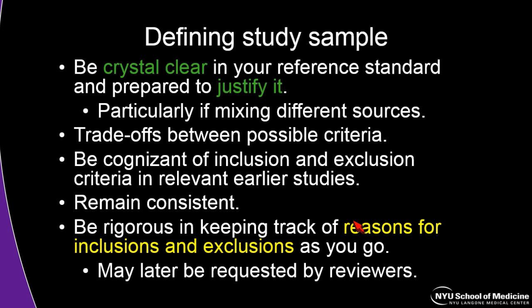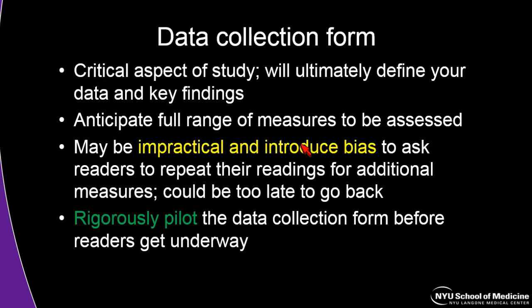There would be nothing more painful than going through a database of 2,000 patients, finding 80 for your project, and then realizing later you need to know why you excluded the rest. You're going to have a data collection form, which is a critical aspect of the study that will ultimately define your data and key findings. Anticipate your full range of measures from the outset and only go through the cases once. If this is a chart review or image review, it can introduce bias to ask readers to go back and repeat readings for additional measures. Rigorously pilot the data collection form before readers get underway.